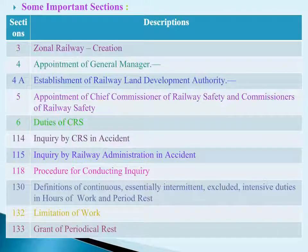Some important sections: Section 3 — Creation of Railway Zones; Section 4 — Appointment of General Manager; Section 4A — Establishment of Railway Land Development Authority; Section 5 — Appointment of CCRS and CRS; Section 6 — Duties of CRS.